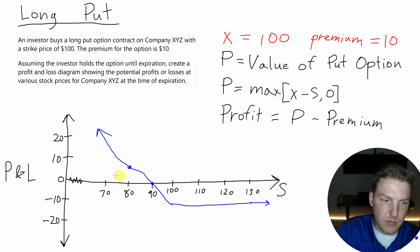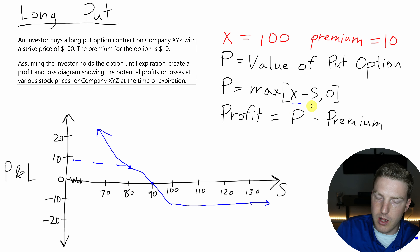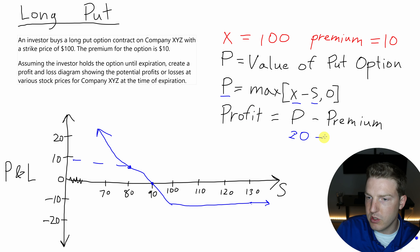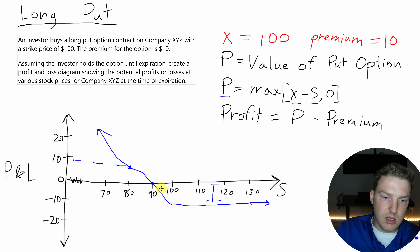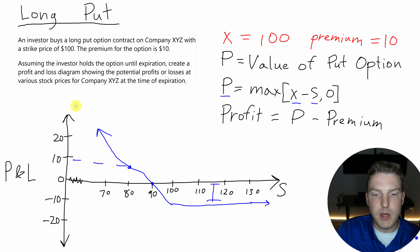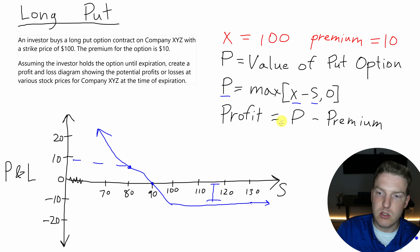Once we get to $80, we're up $10 — we're selling something for $100 that's really only worth $80, so the put option is worth $20, and profit is 20 minus the initial $10 premium, giving a $10 profit. The worst we can ever do is lose the original $10. The best we could do is equal to the exercise price minus the premium. If the stock goes to zero, I can sell it for $100, making the put worth $100, and after the $10 premium I'd be up $90 total.